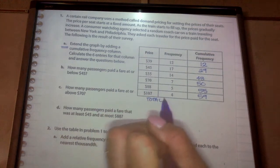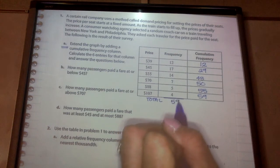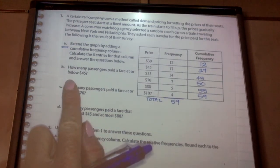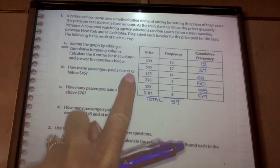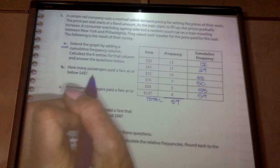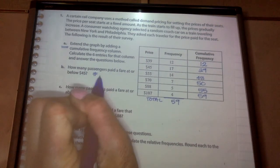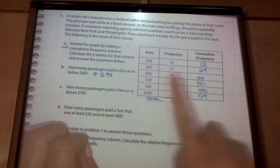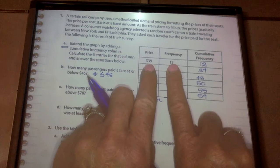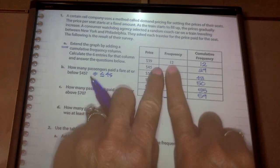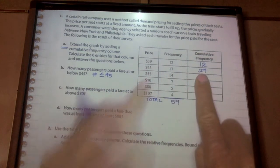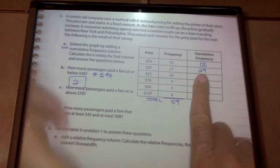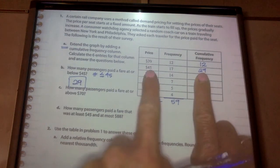If I add this column, if I add all of the frequencies up, I should get 59. So again, remember, the bottom here and here should match. So now I'm going to use this data to complete some of these questions. So it says, how many passengers paid a fare at or below 45? So we're doing how many are at, so equal to, below would be less than 45. So here's my 45 price. There are 17 people that purchased it at 45. There are 12 that purchased it for 39, which is less than 45. I could add those two up, or I could utilize this number here. 29 passengers purchased a ticket at 45 or less.